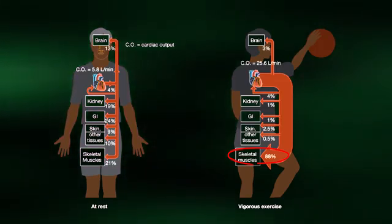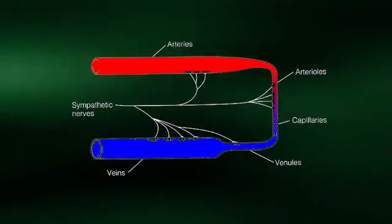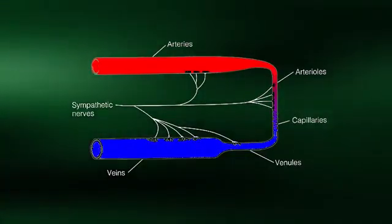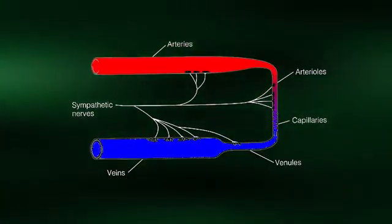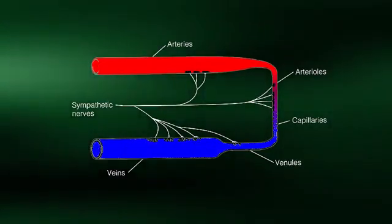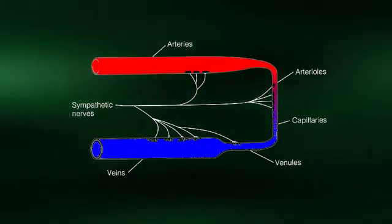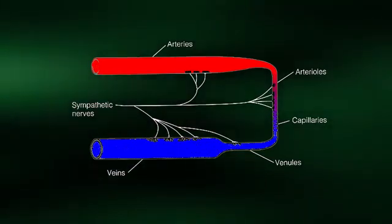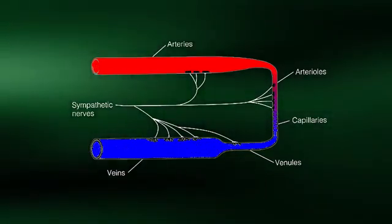Lastly, I wish to point out that vasoconstriction in blood vessels of tissues such as the kidneys and liver is primarily regulated by the sympathetic nervous system. As shown here, the arteries are innervated by sympathetic nerve fibers. During exercise, sympathetic nerve activity to the blood vessels in these tissues increases, causing smooth muscle contraction and vasoconstriction.